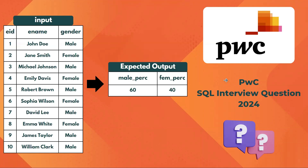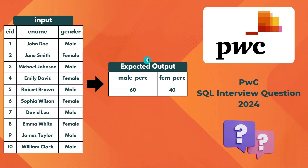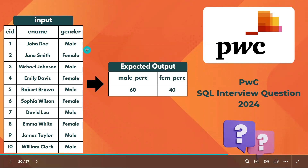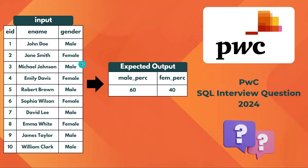Hello everyone, welcome back to the channel. In this video I will be covering one of the SQL intro questions asked in an IPWC interview. Given an employee details table with employee ID, employee name, and gender, we need to find the percentage of each gender. Counting the records, we have six male employees and four female employees out of ten, meaning 60% male and 40% female.